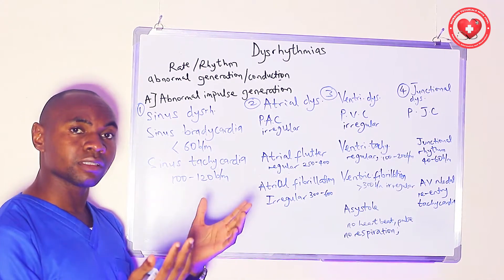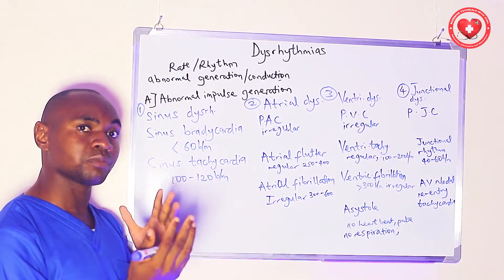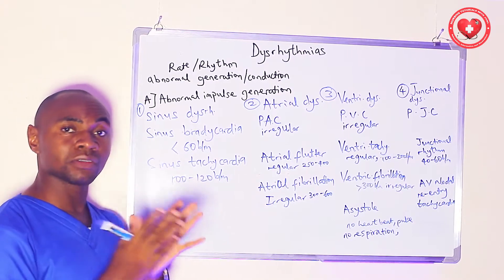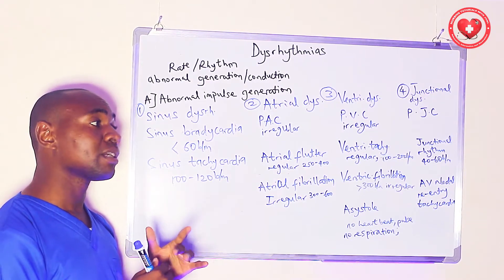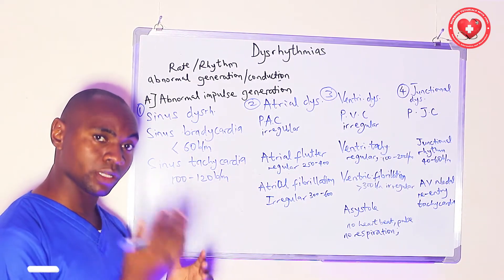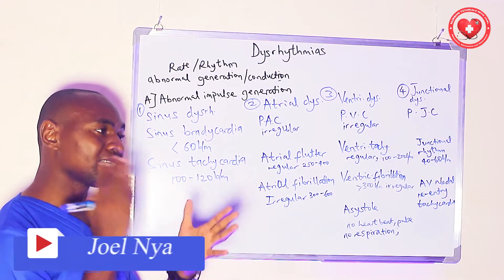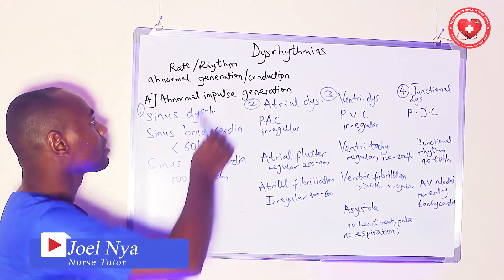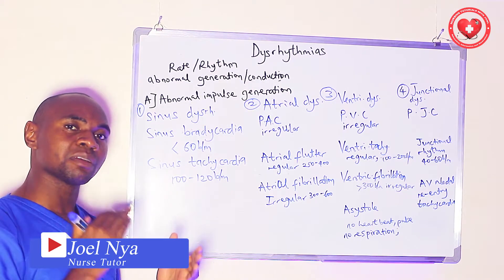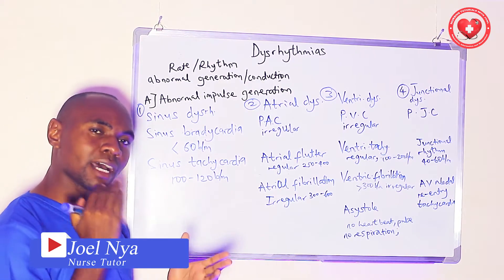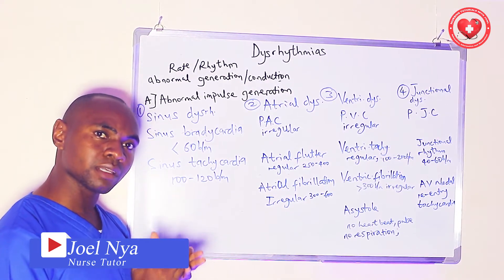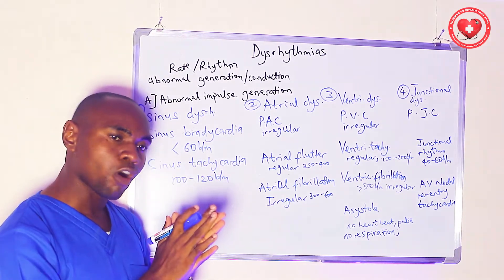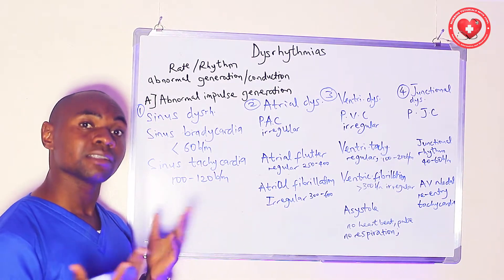Normal heart rate is 60 to 100 beats per minute and we call that sinus rhythm, meaning that it originates from the sinoatrial node at the rate of 60 to 100 beats per minute. When we talk of heart rhythm, we're talking about the pattern at which this beat takes place — either it is regular or it is irregular.